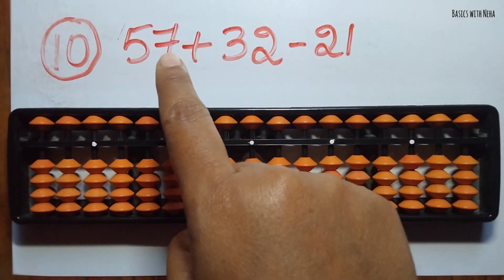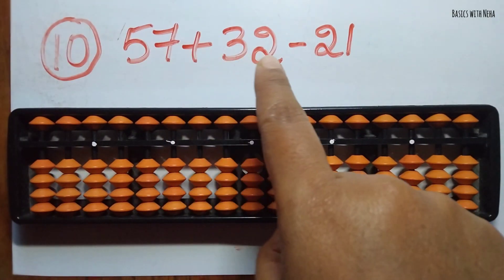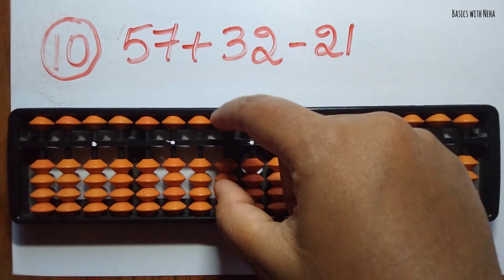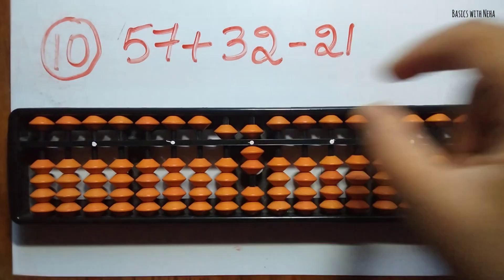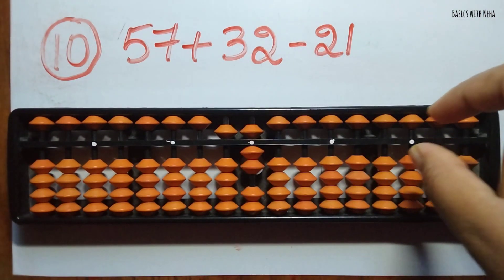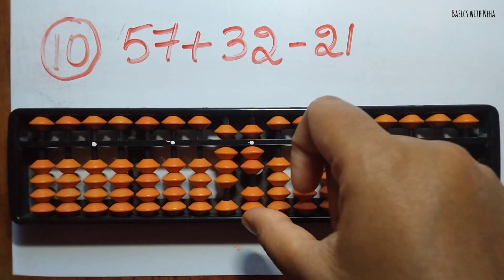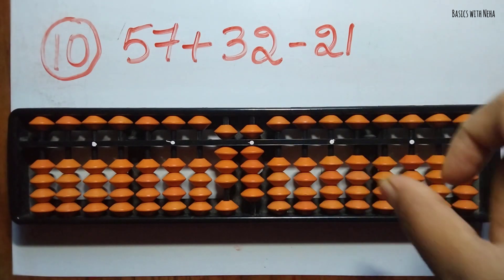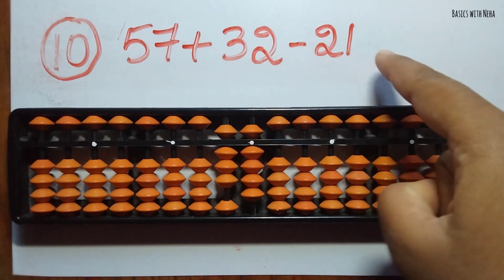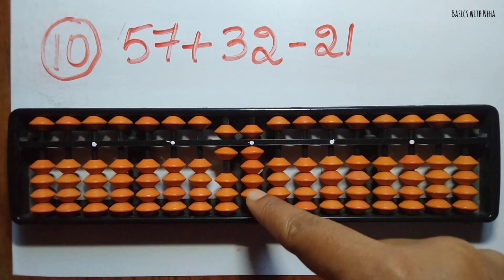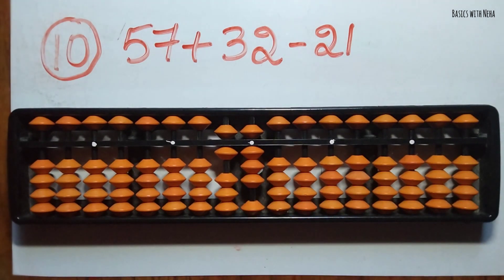The tenth sum: 57 plus 32 minus 21. First take 57, now add 32 — add 3 in the 10's rod and 2 in the 1's rod. Then minus 21 — minus 2 in the 10's rod and minus 1 in the 1's rod. The answer is 68.